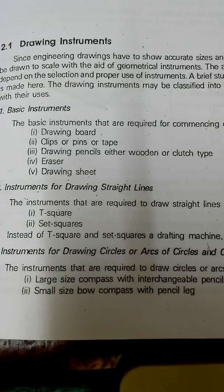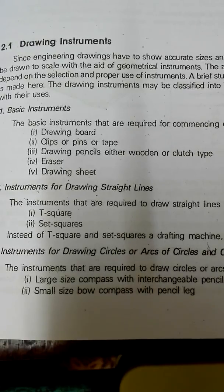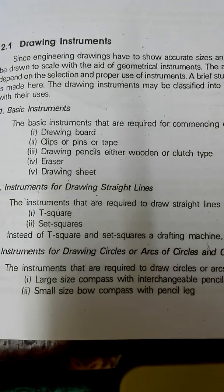Both the production member and the design member need to understand the concepts — what each point indicates, what is the front view, what is the top view, what is the side view. Both have to understand these, so they can manufacture things easily. When a design engineer has designed some object or element, he will draw the projections: front view, top view, and side view, along with all the values.